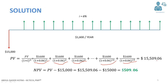The total present value will be $15,509.06. In order to calculate the NPV we have the formula NPV equals present value minus the amount initially invested, which is $15,000. When we carry out these calculations we can see the value is positive: $509.06.